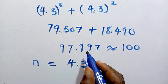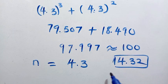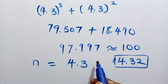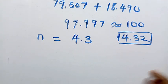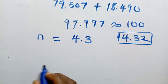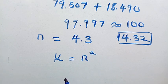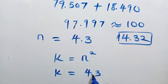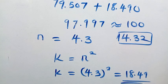We could try n = 4.32 to get even closer — that gives around 99 point something. Since we have the approximate value of n, we go back to where √k = n, so k = n². Therefore k = 4.3² = 18.49. So 18.49 is the approximate solution for k.